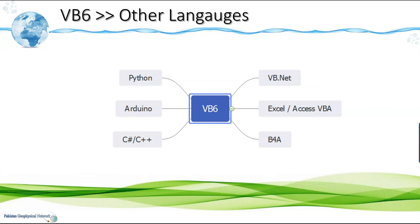By learning VB6, you will be able to work in VB.NET. Similarly, there is a version of VB called Visual Basic for Applications, which is available in all Microsoft Office applications. For the Android platform, we have Basic for Android. And once you know the programming concepts, you would be able to program in C# and C++. If there is a requirement for hardware connectivity, you would also be able to work in Arduino, and you can easily use Python.